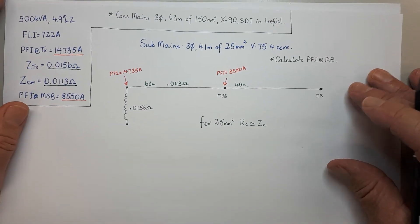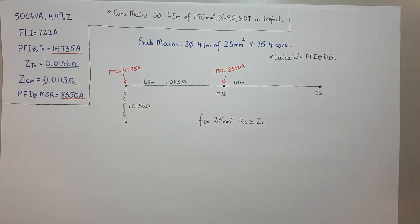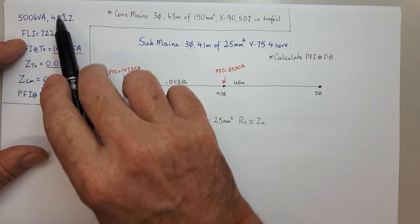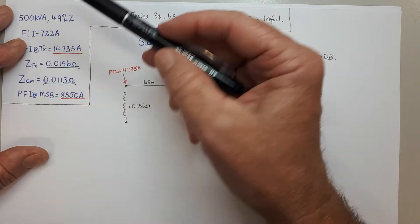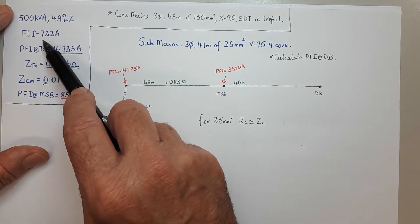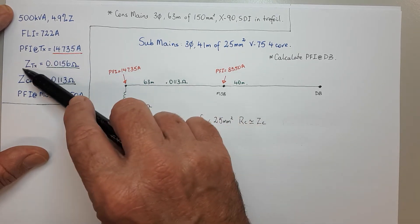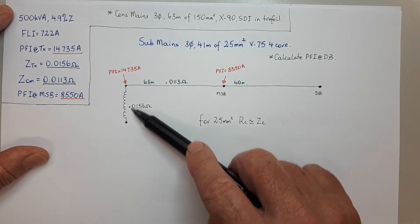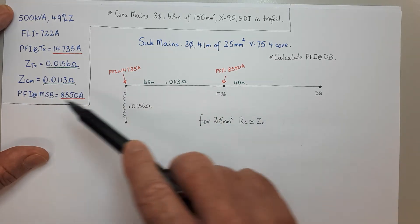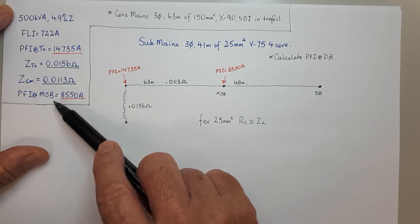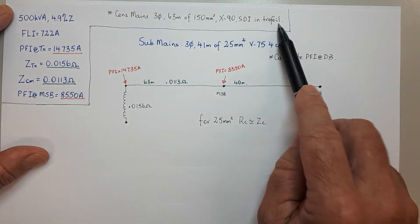Following on from our last adventure with prospective fault current, we worked out all this information: the transformer, the full load current, the prospective fault current at the transformer, the impedance of the transformer winding, the impedance of the consumer's mains which we worked out in the last video, and the prospective fault current at the main switchboard — that's all in here. And that was the consumer's mains that we used.